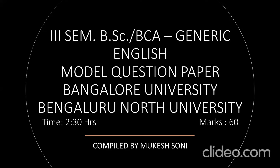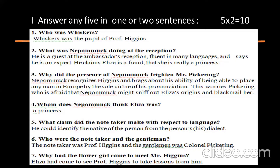The examination is for 60 marks, duration 2 hours 30 minutes. The first section of this question paper consists of 30 marks — that is for the short play Pygmalion by George Bernard Shaw. Under this, we have Section 1: answer any 5 questions in one or two sentences. Each question is for 2 marks.